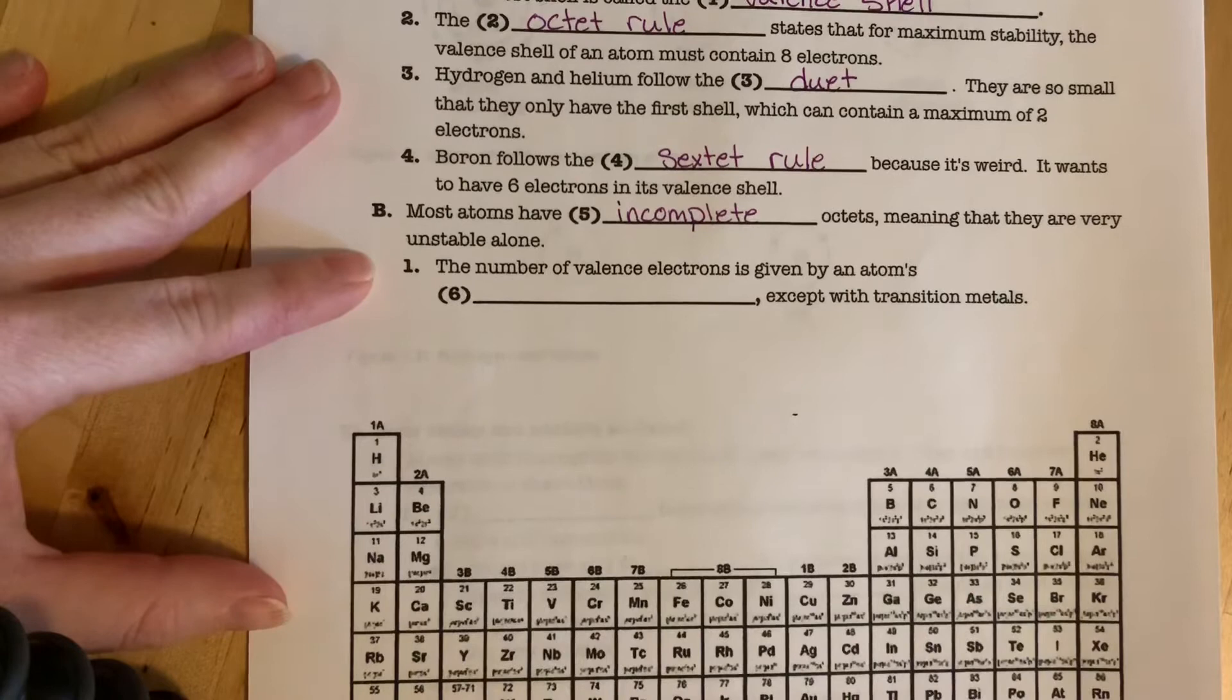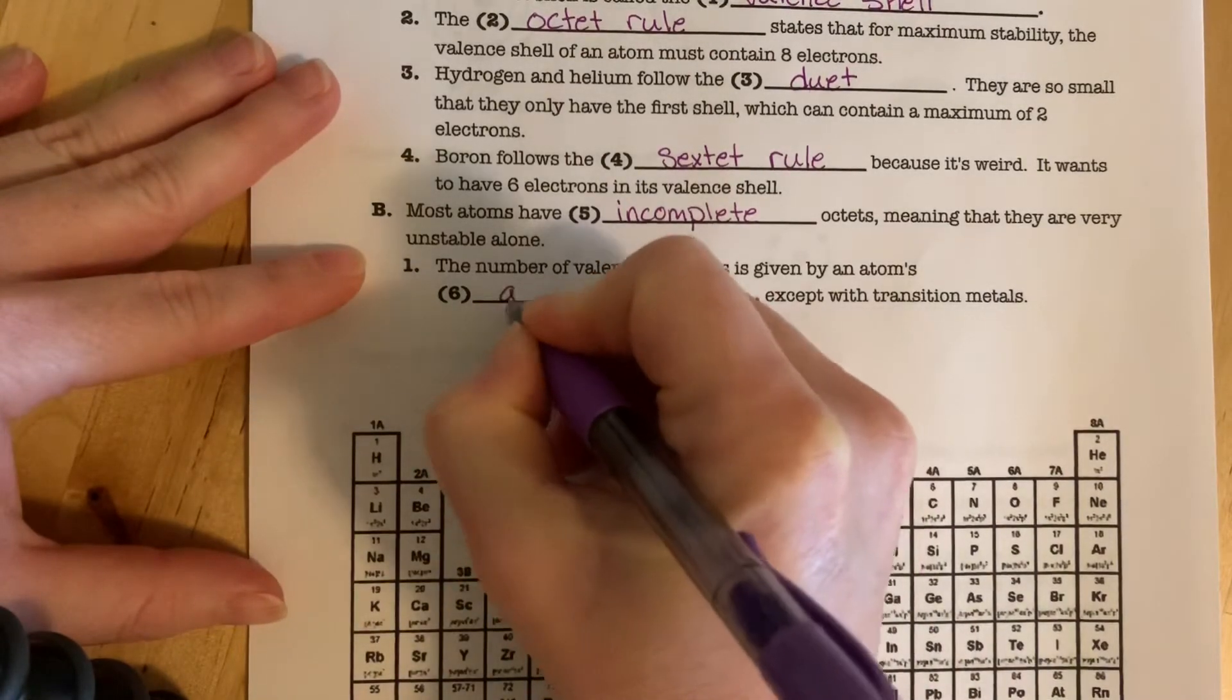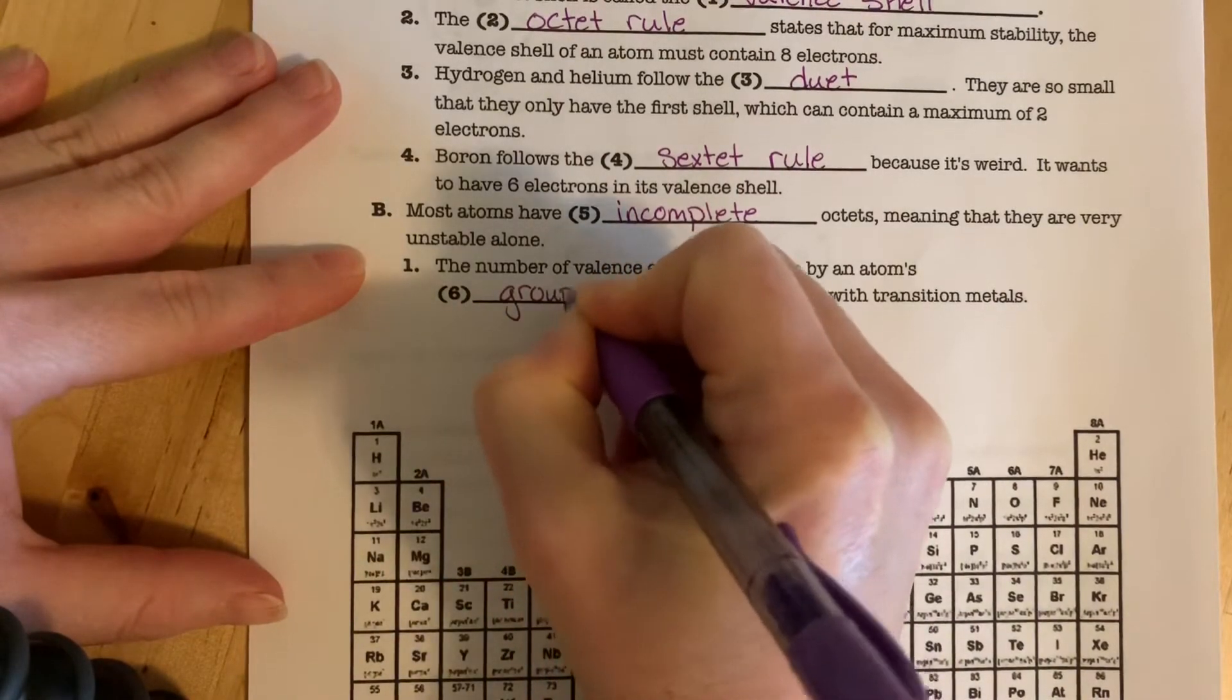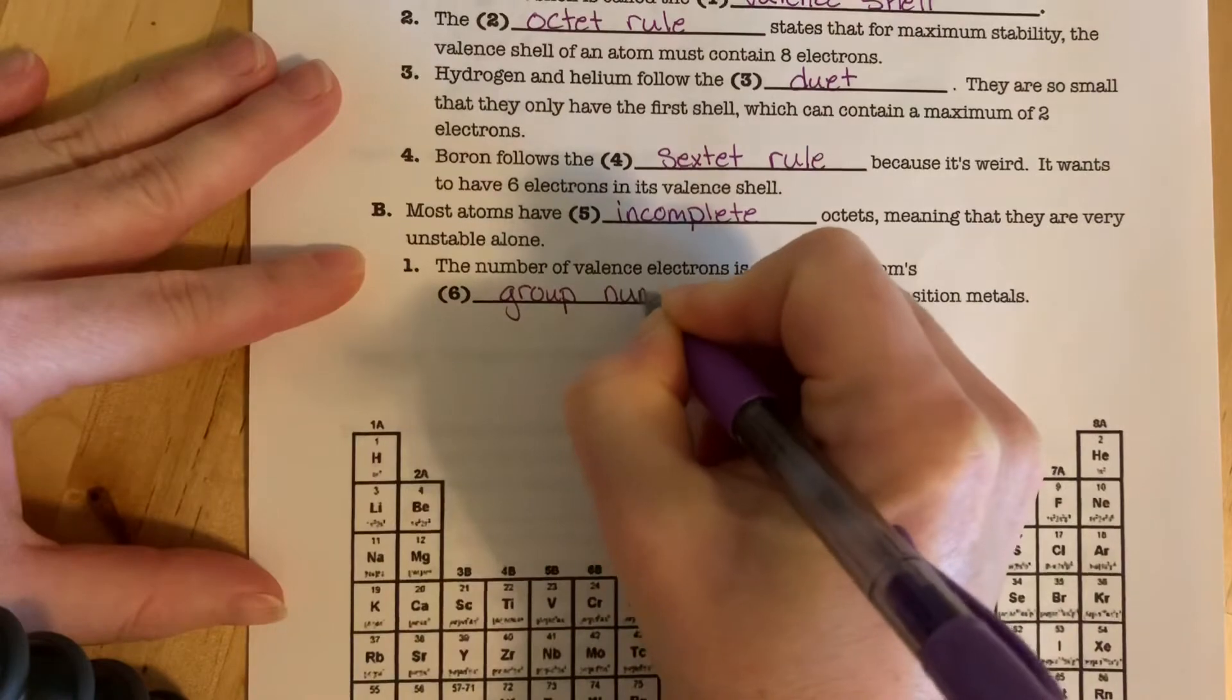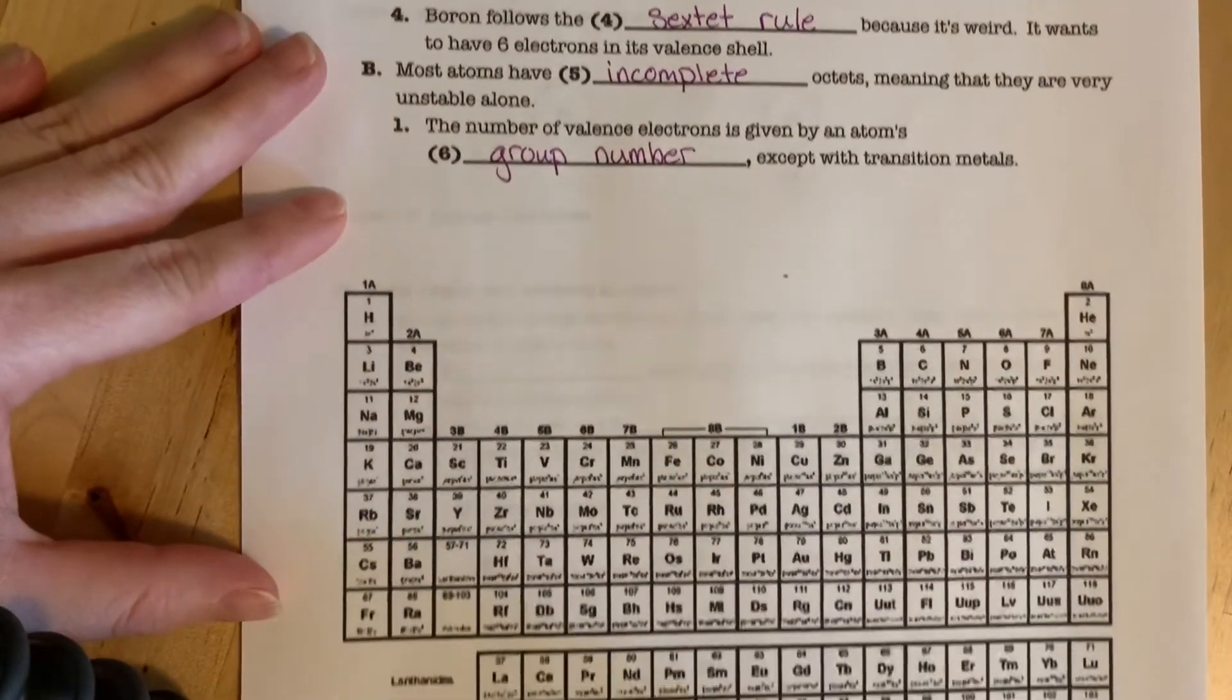The number of valence electrons that is actually contributed by each atom is given by the group number on the periodic table.